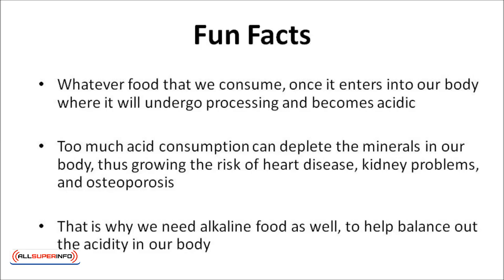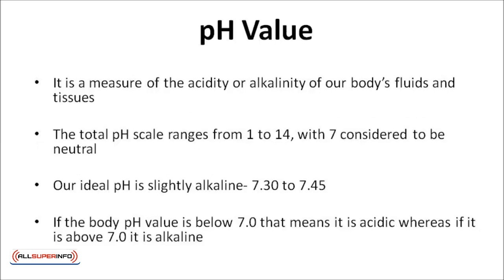Next, we'll talk about pH value. pH stands for power of hydrogen. It's a measure of the acidity or alkalinity of our body's fluids and tissues. The total pH scale ranges from 1 to 14, with 7 considered to be neutral. Our ideal pH is slightly alkaline, at 7.3 to 7.45.